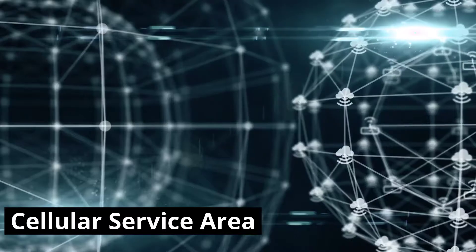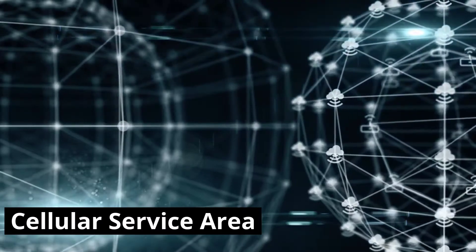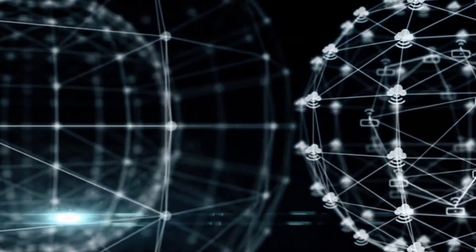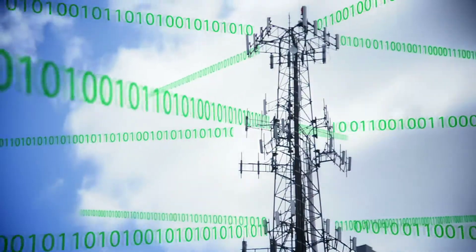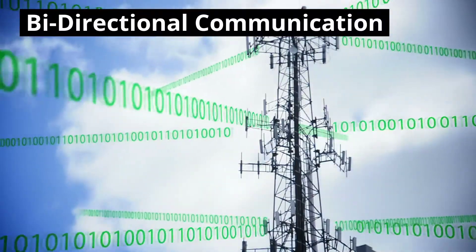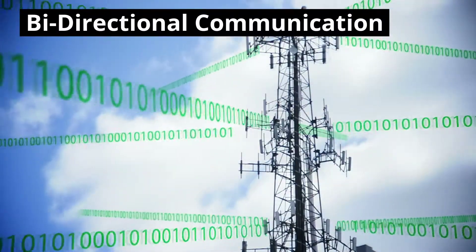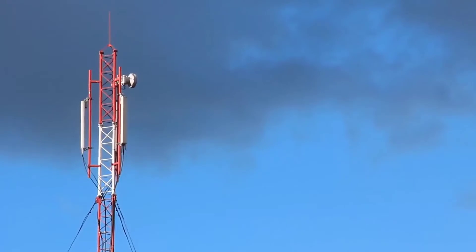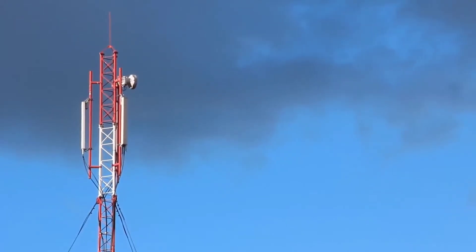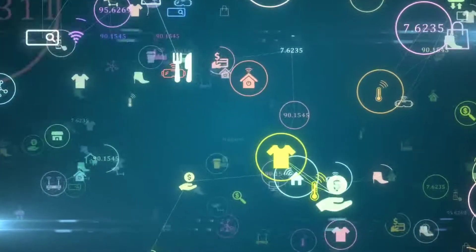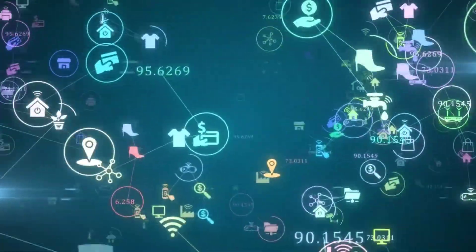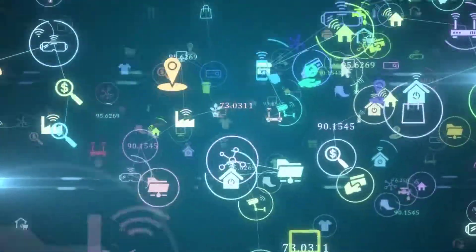Mobile phone network consists of the cellular service area. It's a hexagon-shaped virtual area that consists of cell phone towers. These towers maintain bi-directional communication with all mobiles within the grid. If you turn your phone on, it immediately contacts the cell phone towers in the area to get the signal and registers its presence.